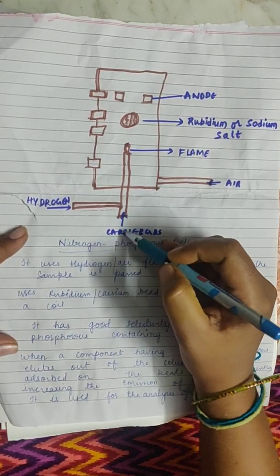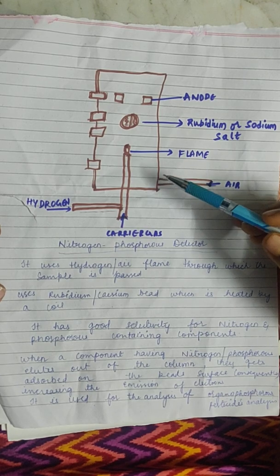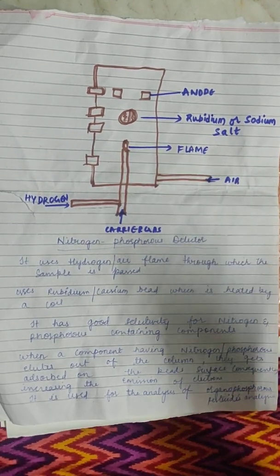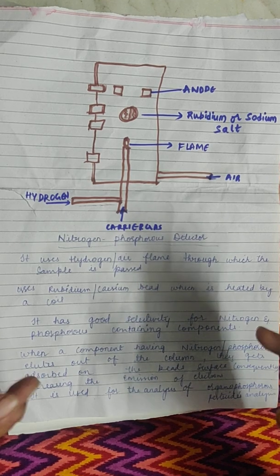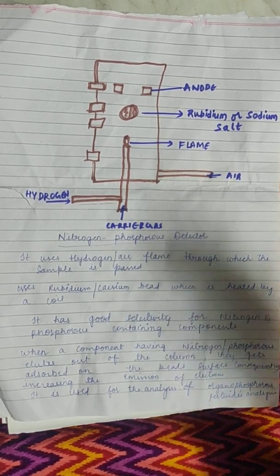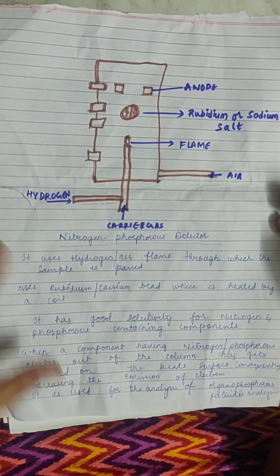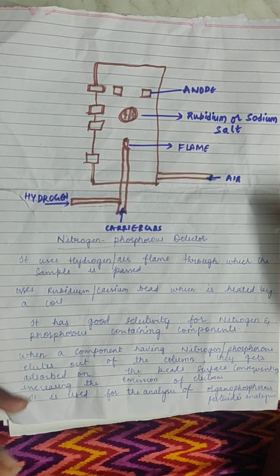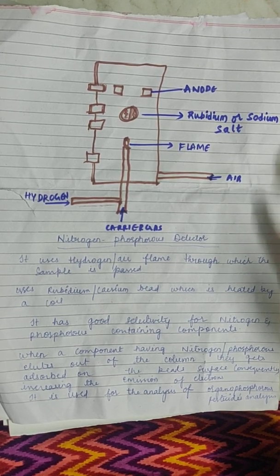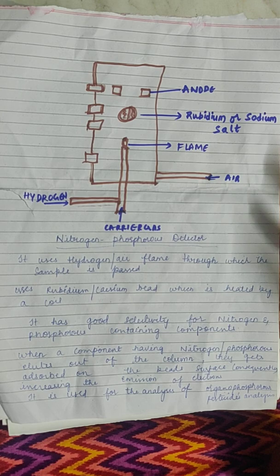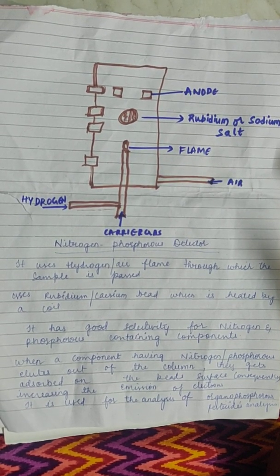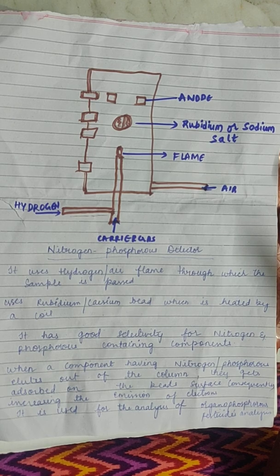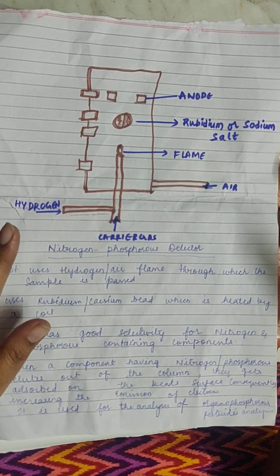When a component containing nitrogen or phosphorus elutes out of the column with the carrier gas, it is adsorbed on the bead surface. It is then partially ionized, which increases the emission of electrons. This increased emission of electrons is detected by the detector. It is mainly used in the analysis of organophosphorus pesticides in agricultural samples.